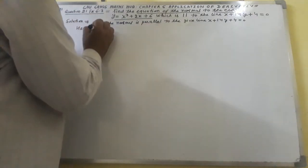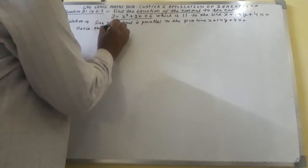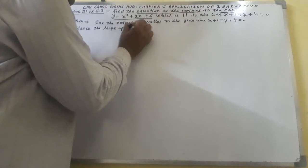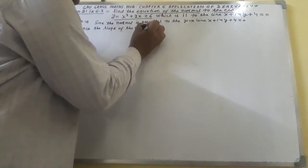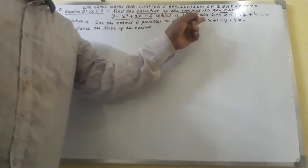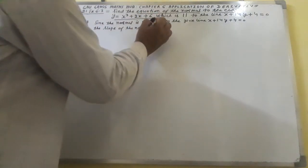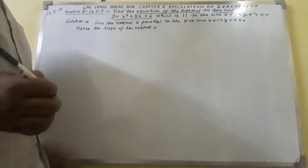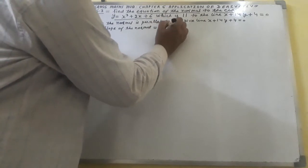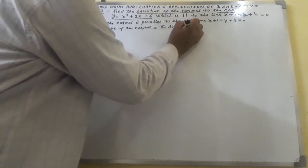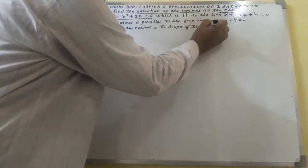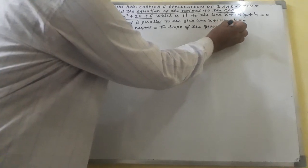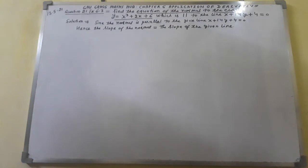Hence, the slope of the normal will be equal to the slope of the given line. This is the principle on which we shall proceed further.